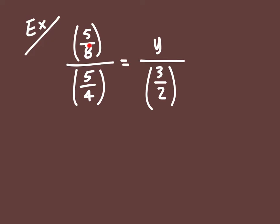But let's go ahead and just solve this the same way we just did the previous one, only now we're dealing with fractions instead of just integers. So, let's cross-multiply both of these. And I'm going to do 5 eighths times 3 halves, and that's going to be equivalent to y times 5 fourths. Or 5 fourths y, however you want to write that.